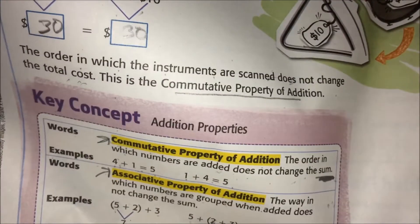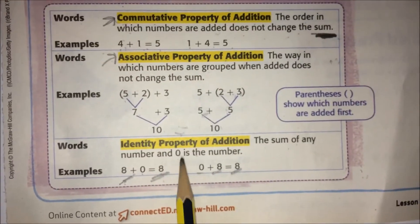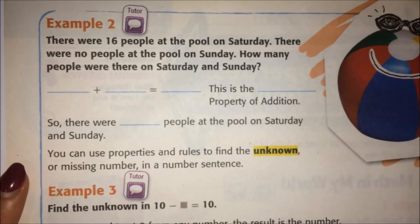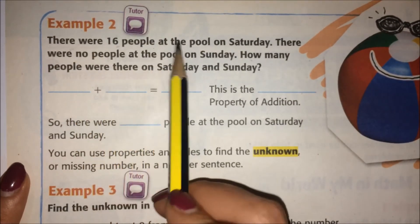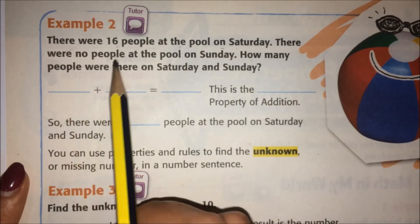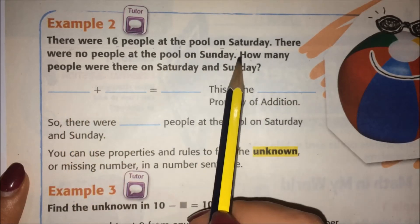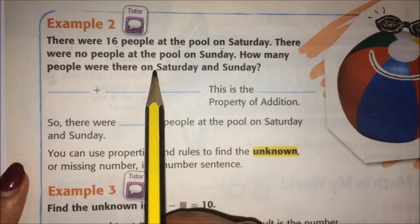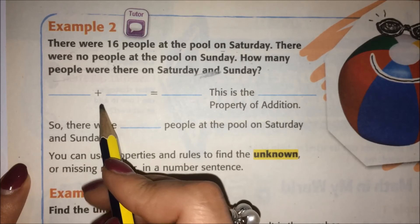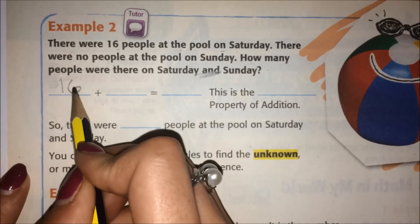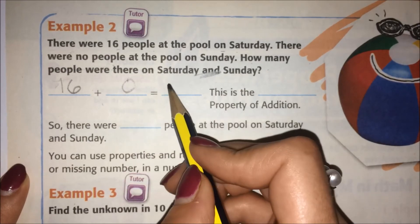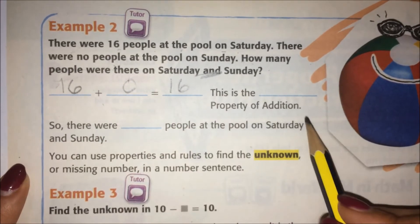Let's flip the page, but we're still going to need to use this key concept box. There were sixteen people at the pool on Saturday. There were no people at the pool on Sunday. How many people were there on Saturday and Sunday? And means plus. So sixteen people first. No people.